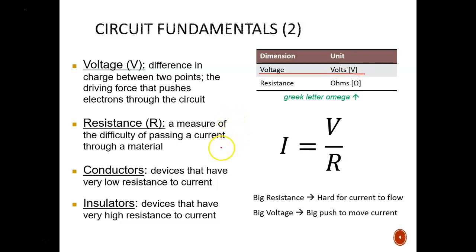Resistance is how difficult it is to pass a current through a material. Materials like metals or salty water are conductors, which means they have low resistance and allow electrons to flow relatively easily.